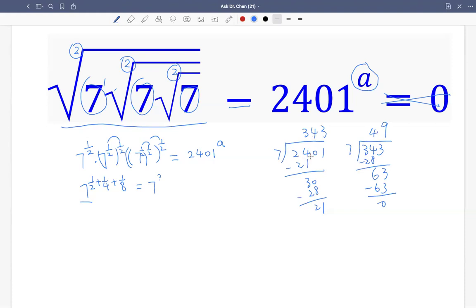So that means 2,401 is 7 times 7 times 49, which is 7 times 7 times 7 squared, so 7 raised to the 4th. Therefore, 7 raised to the 4th is 2,401, now raised by a.